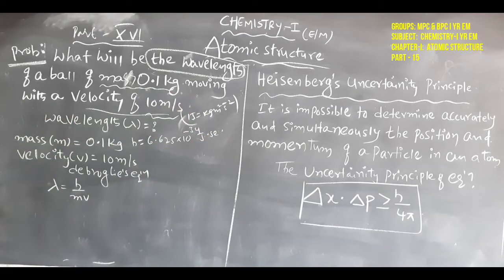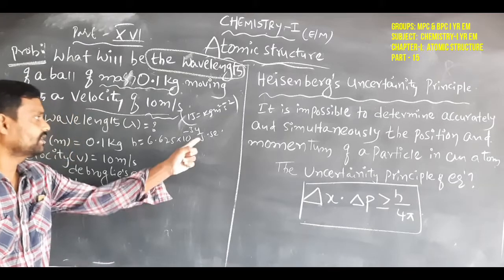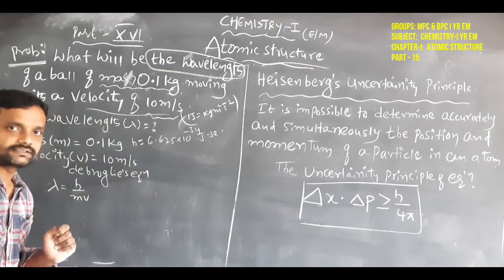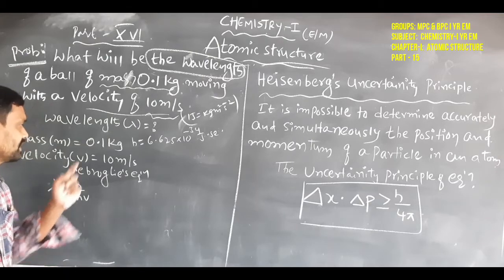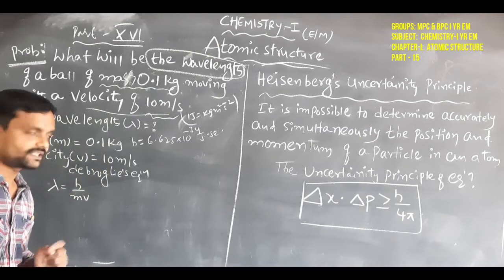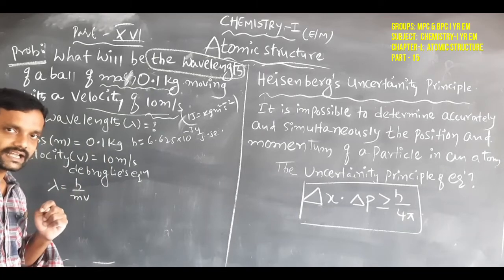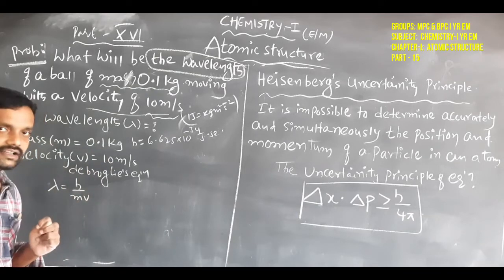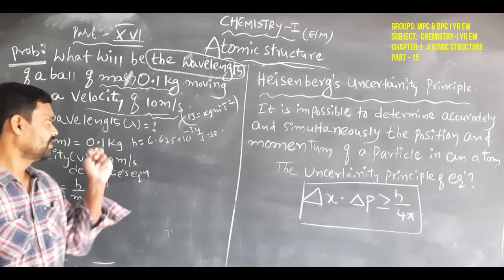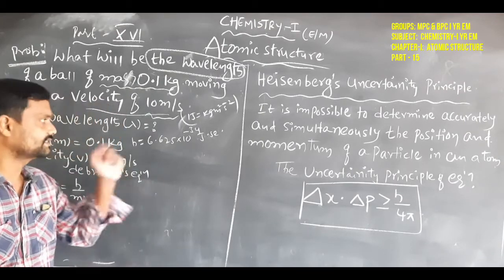In CGS units, Planck's constant is 6.626 × 10⁻²⁷ erg·second. But here we use joules because joules are the higher unit in the MKS system. Since mass is in kg and velocity is in meters per second — both MKS units — Planck's constant is also taken in joules.